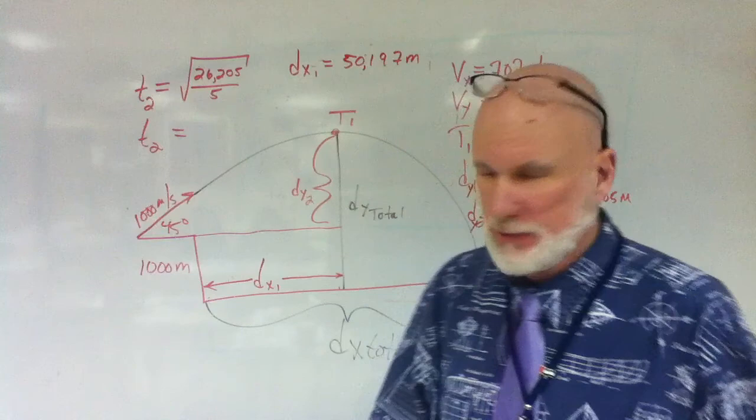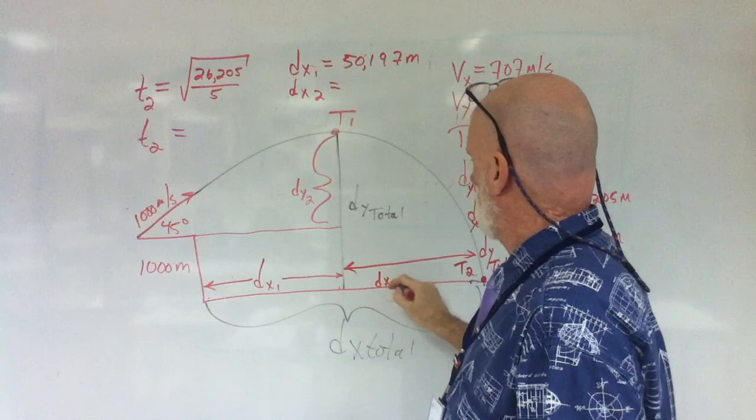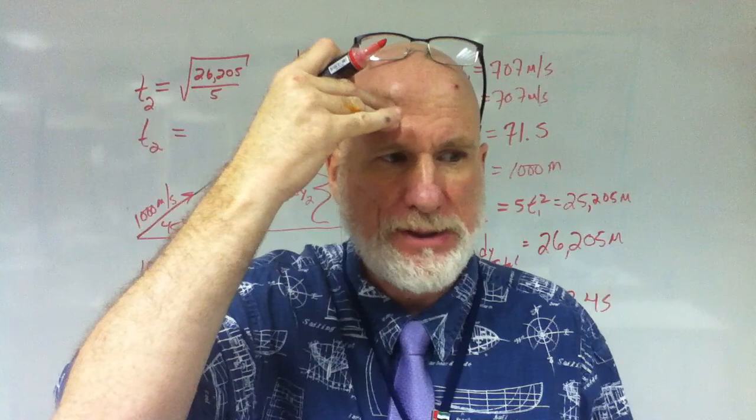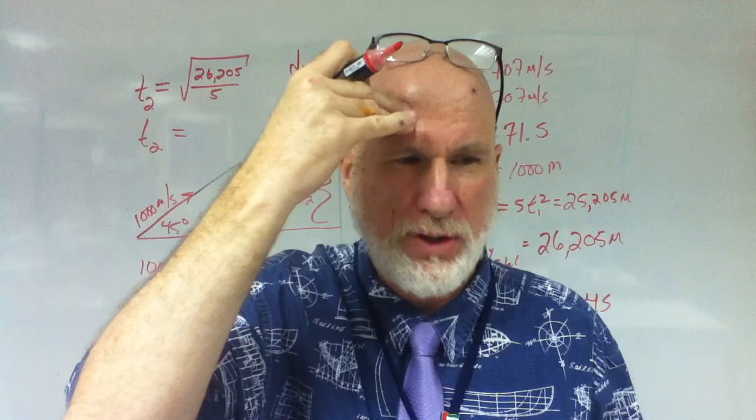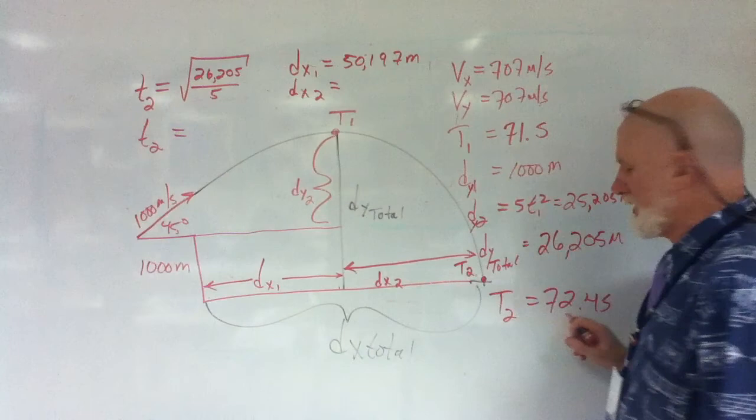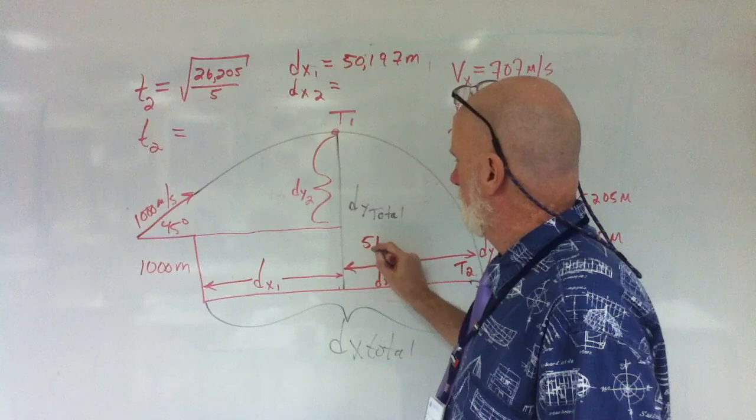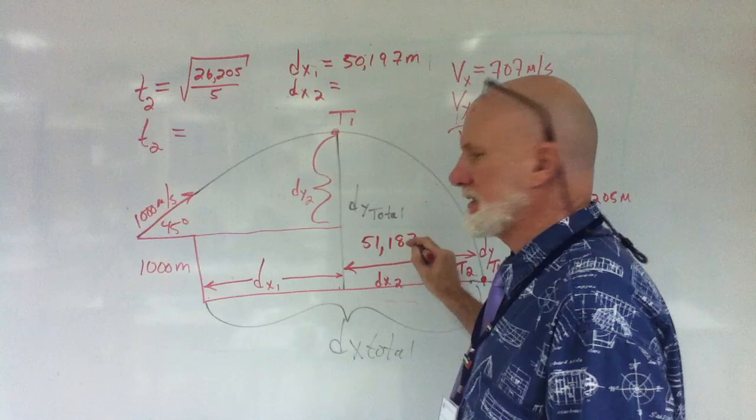Okay, so, what's dx... This is dx2 here. dx2 is going to be t2 times 707. Yes? Meters per second? Omar, are you with me on that? Yes. Good. So, what is 707 times 72.4? 5,000. What is it? 51,000 and 186.8. 51,000 187. Yeah. Rounded? Yeah, rounded. It's 186.8. All right, so. So, we need to close this up here.